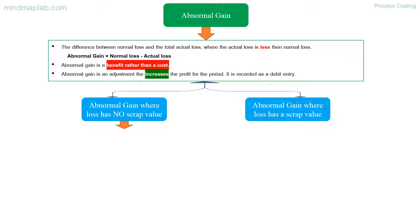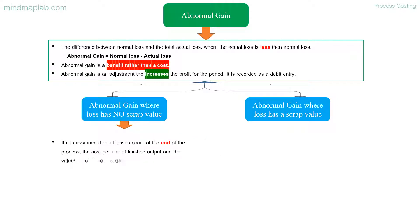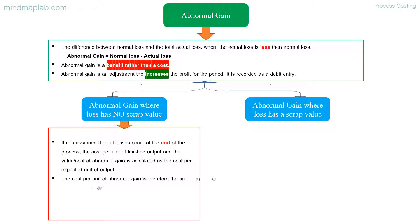Abnormal gain where loss has no scrap value: if it is assumed that all losses occur at the end of the process, the cost per unit of finished output and the value of abnormal gain is calculated as the cost per expected unit of output. The cost per unit of abnormal gain is therefore the same as the cost of units of good output. Cost of output equals total process cost minus scrap value, divided by expected output.